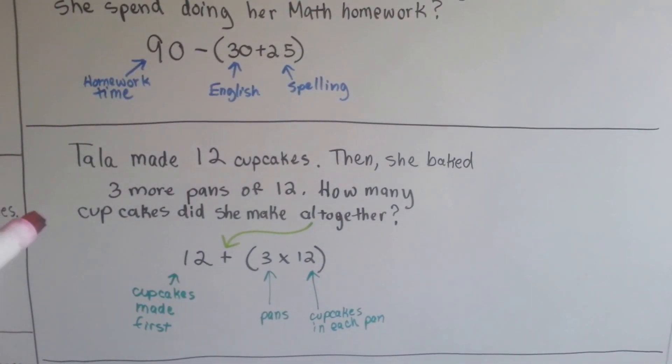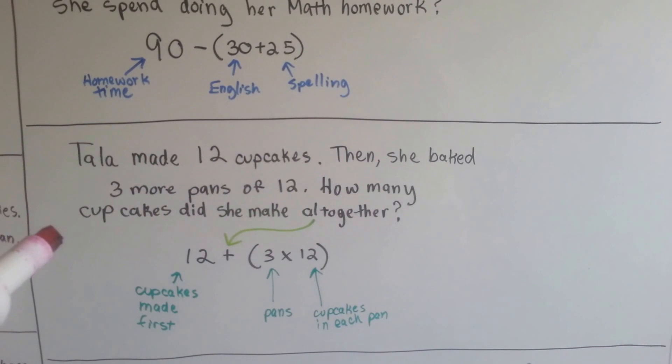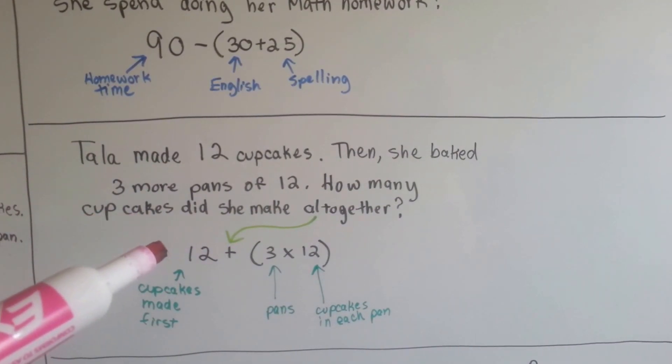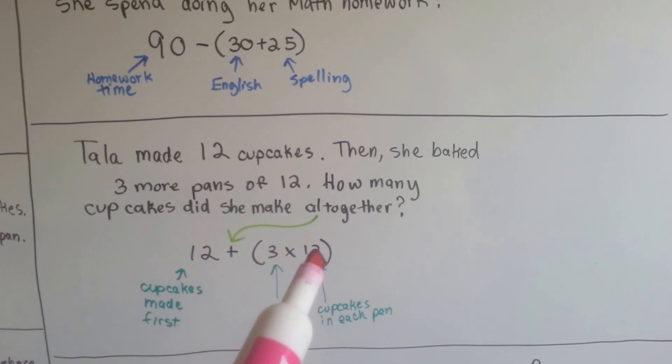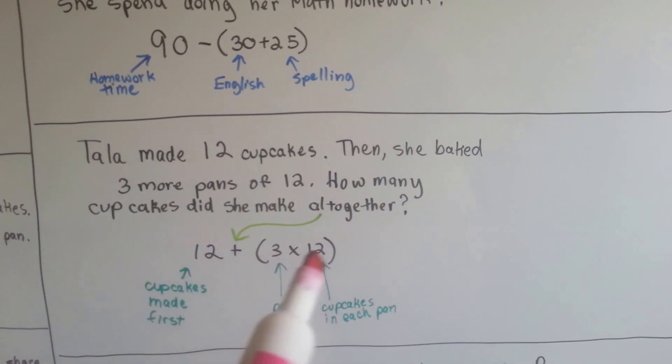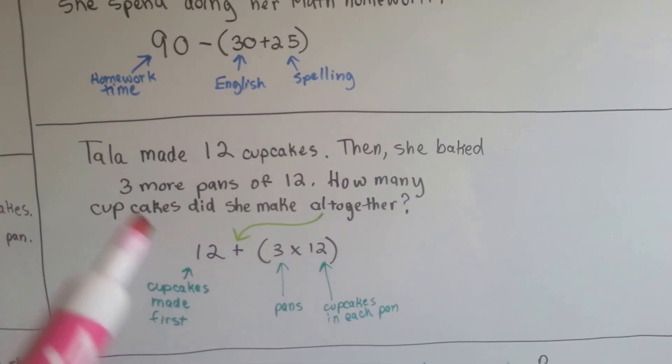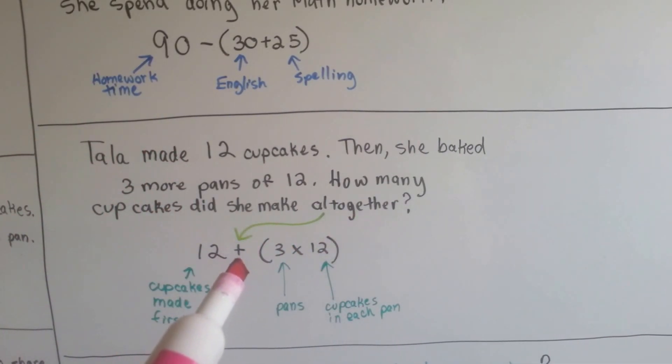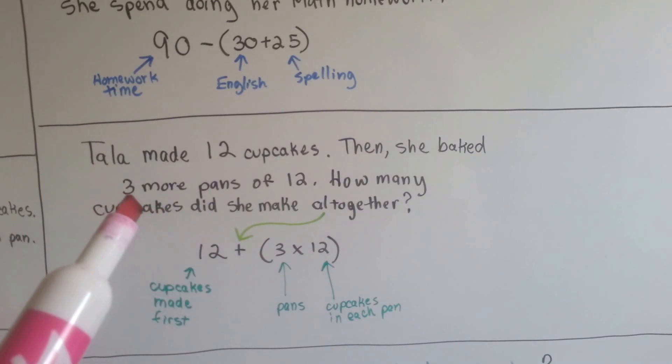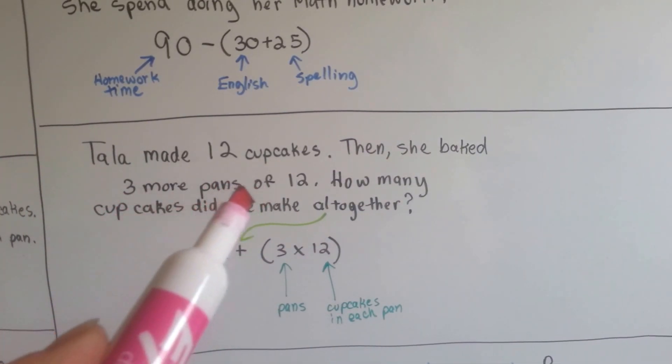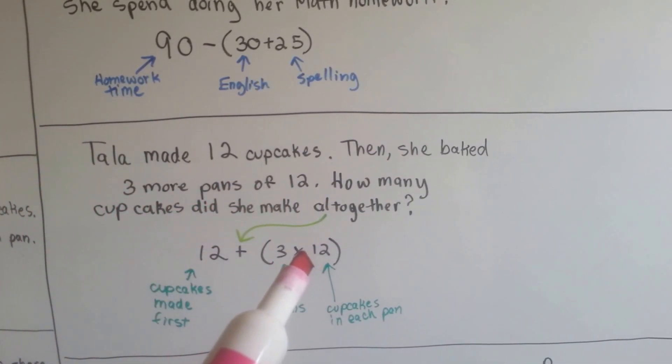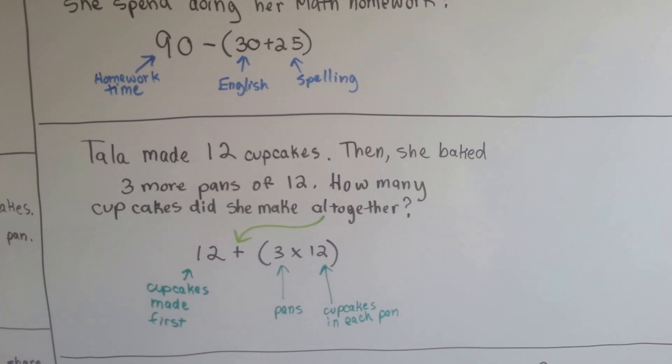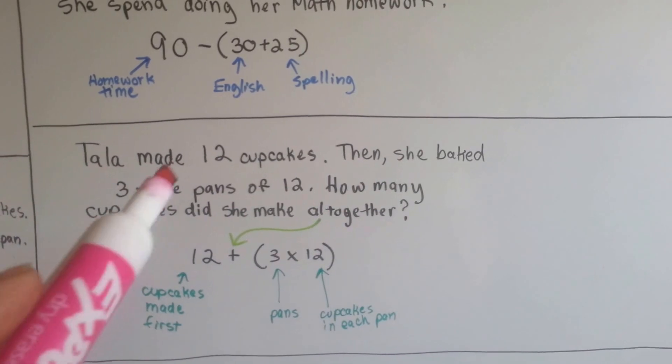Tala made 12 cupcakes, then she baked 3 more pans of 12. How many cupcakes did she make altogether? She started with 12 and then she made 3 pans of 12. So this story tells us what this story tells us. The altogether tells us we need to do addition and that the word of, 3 pans of 12, tells us that this is multiplication. See? 12 plus 3 times 12 tells us this story.